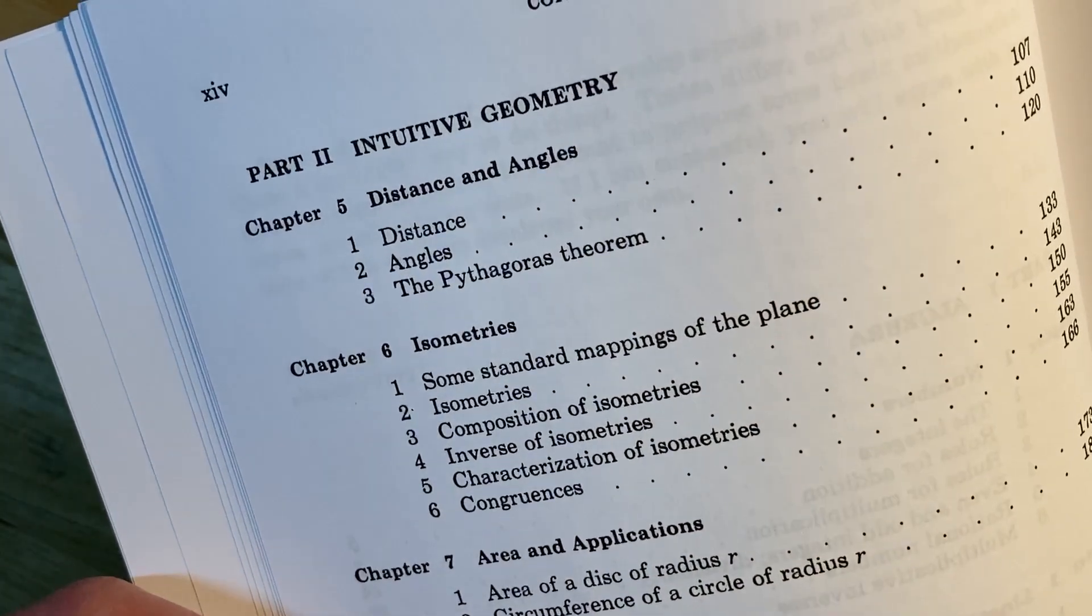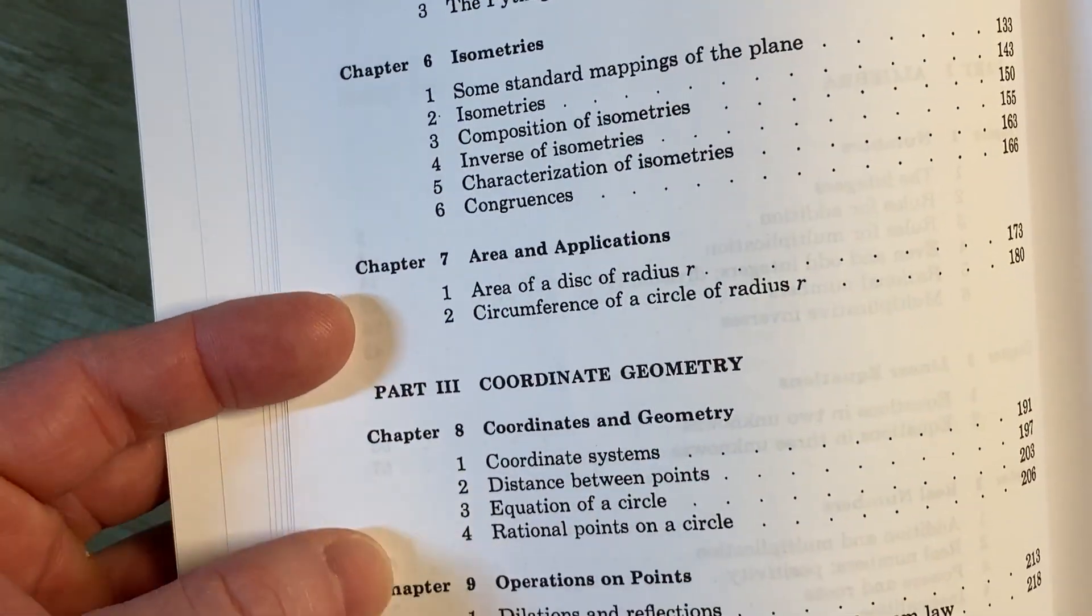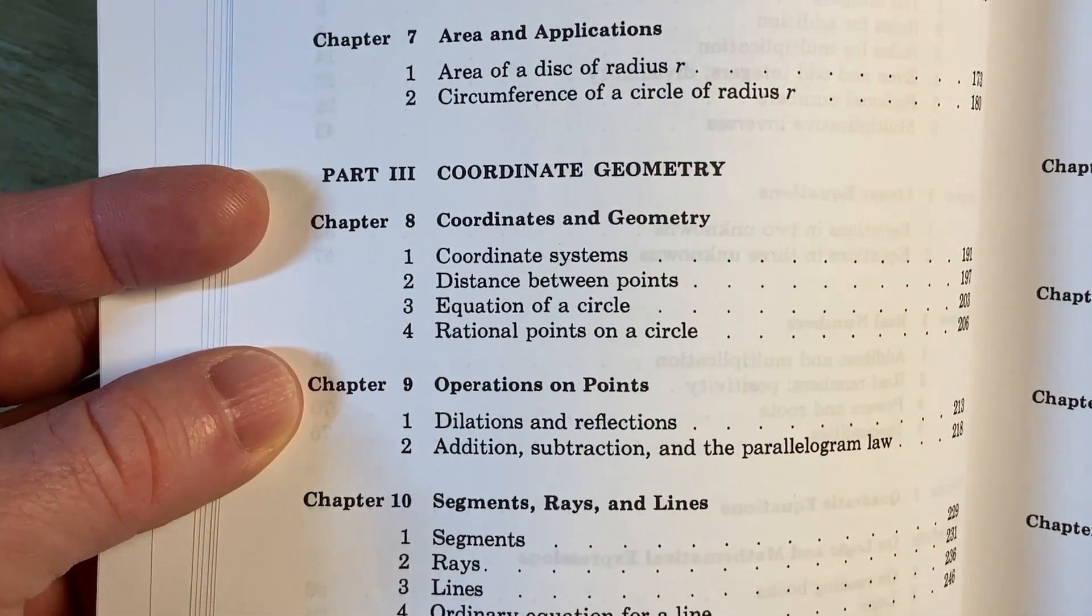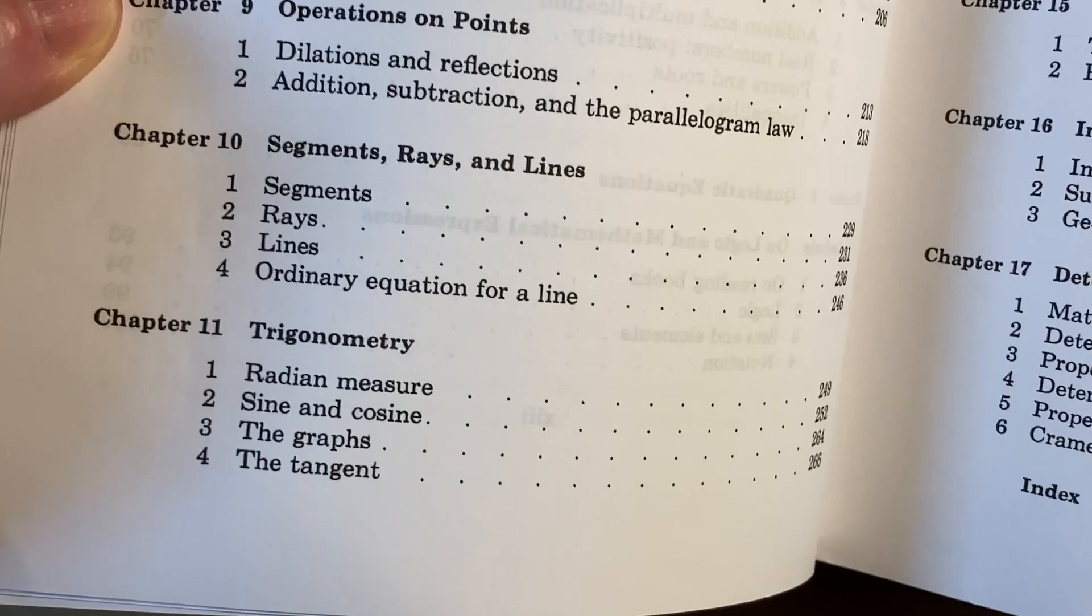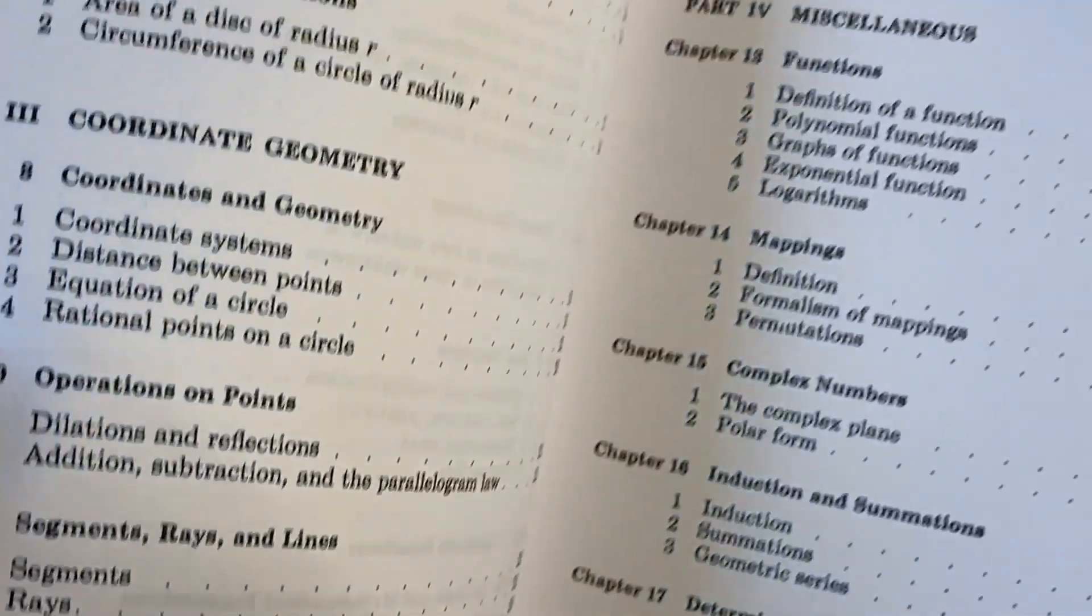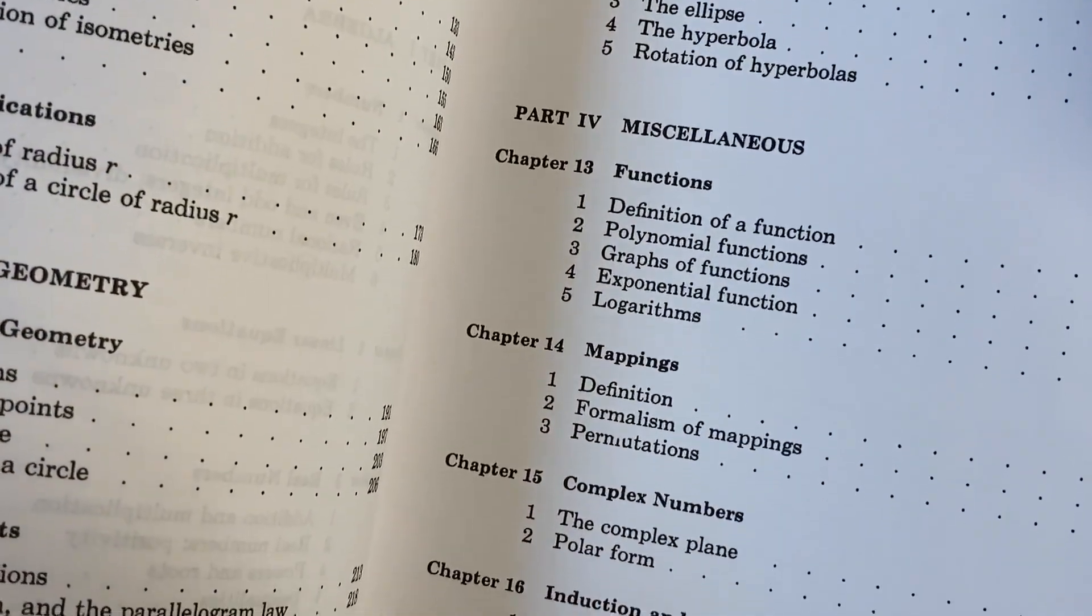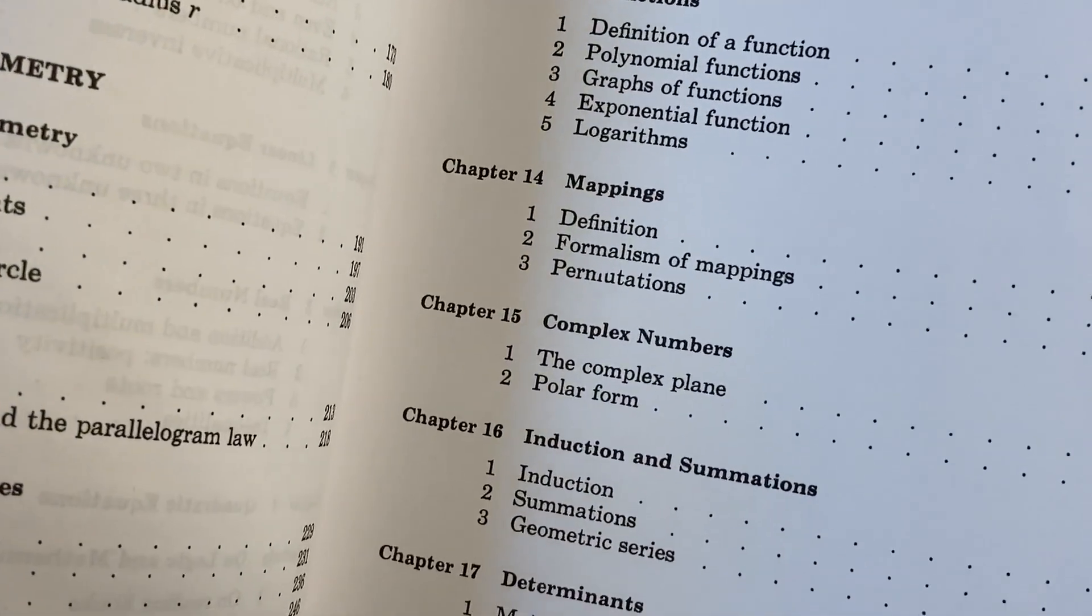This is not a book you would use for a course, I think. I don't know of any courses that use this book because it covers such a unique set of topics. Some geometry, some trig. It's got an entire section on sine and cosine. Very strange. Not typically how it's presented.